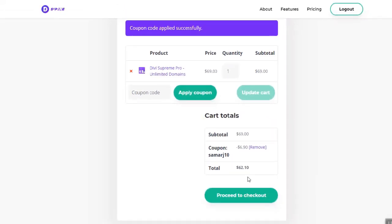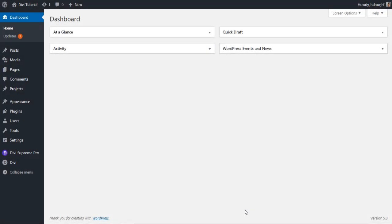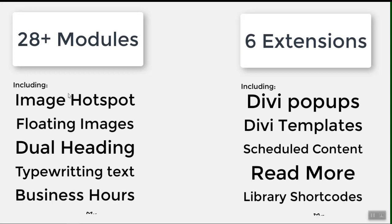Let's get started with the image hotspot module. Not only the image hotspot module — you also have 28+ modules inside the DB Supreme plugin, and six extensions including DB pop-ups, which is a very interesting extension to make pop-ups inside DB Builder.